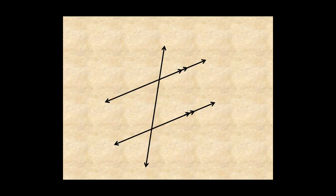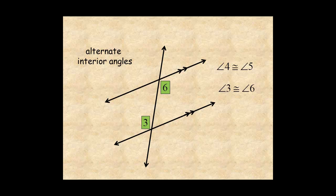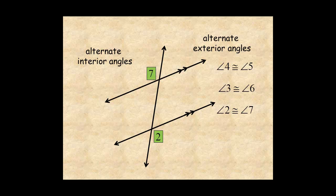Also, alternate angles are congruent. So that's alternate interior angles 4 and 5, and 3 and 6. Also, alternate exterior angles 2 and 7, and 1 and 8.